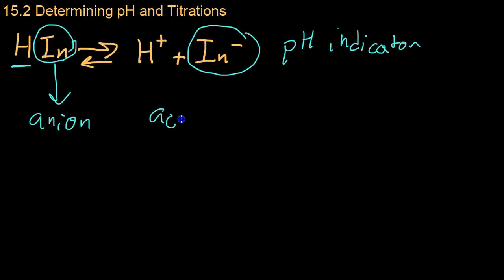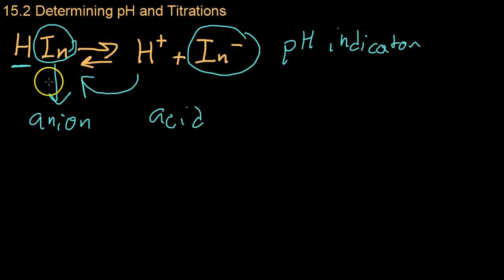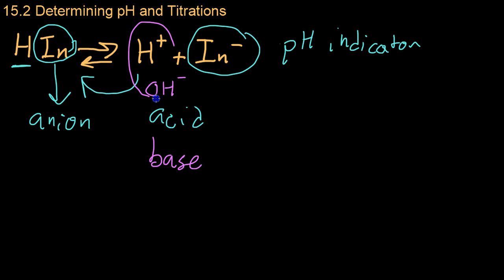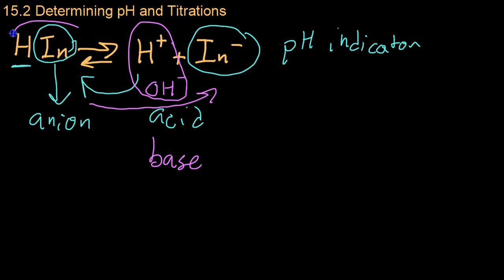If you add an acid to this mix, it will shift the balance to the left, because there are too many H+ ions — they'll recompile with the anions and shift the equilibrium to the left. Similarly, if you have a base, all the OH- ions that the base gives off in solution will combine with these, and you'll have free anions. So the balance will shift to the right. It's these different concentrations — whether there's more of the original indicator compound or whether it's broken up into ions in solution — that gives a pH indicator its specific color.